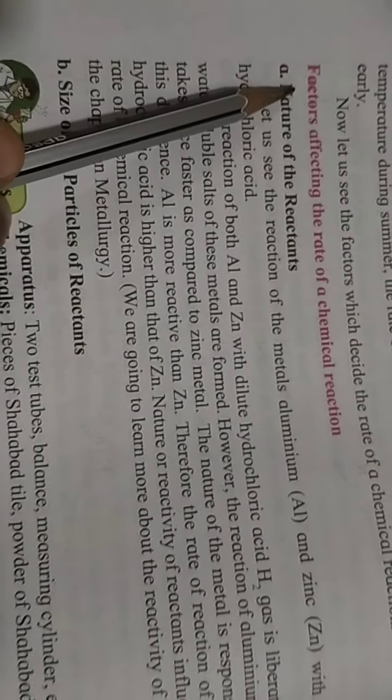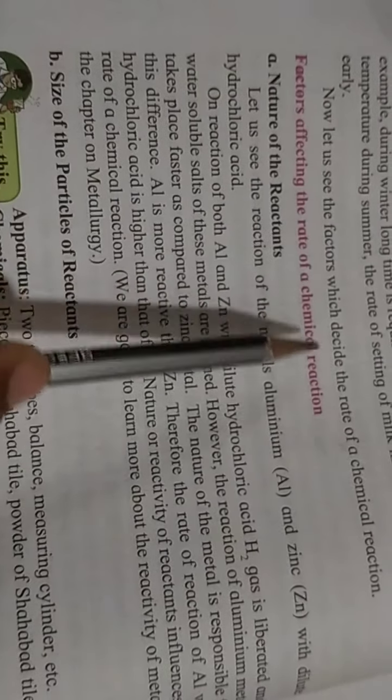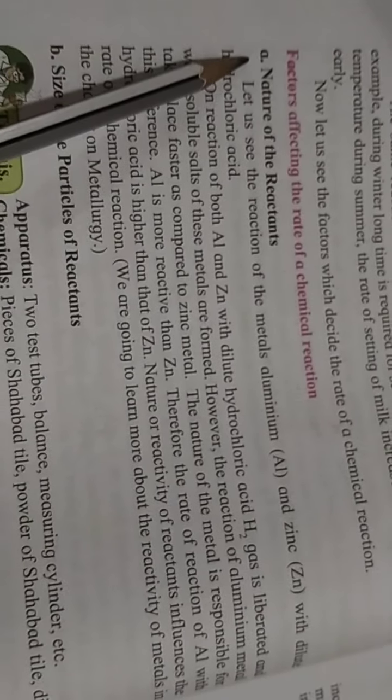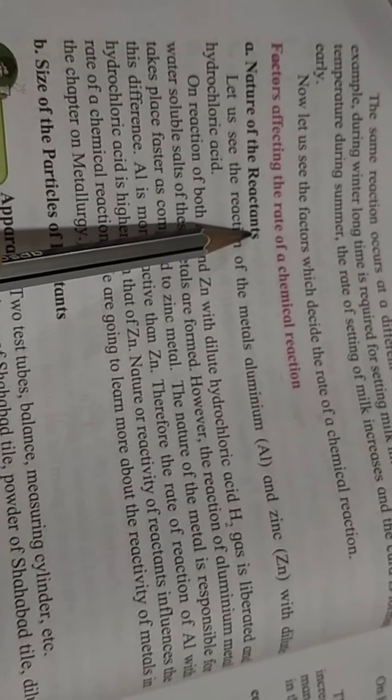Now students, we are going to see the factors affecting the rate of chemical reaction. First is the nature of the reactant.